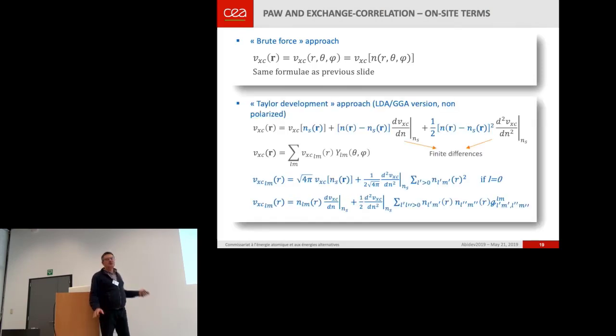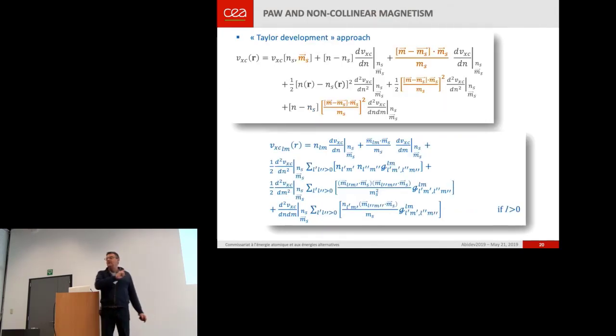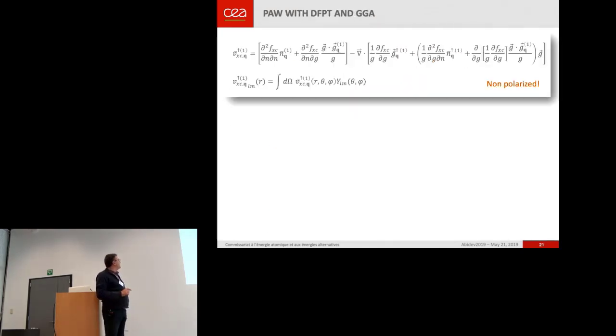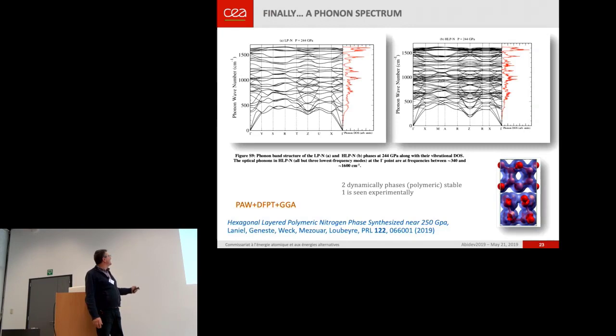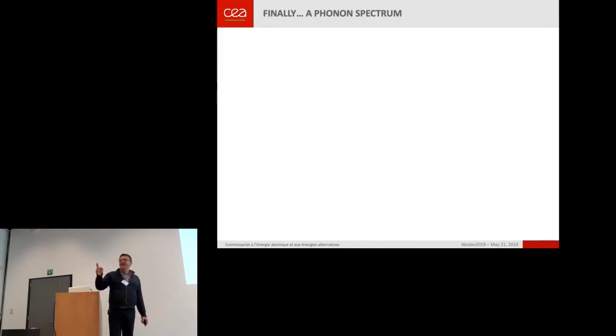I wanted to show you some physical results. It's a computation done in GGA plus DFPT. Not yet including a spin-orbit coupling, but I wanted to illustrate and to show you that it works.